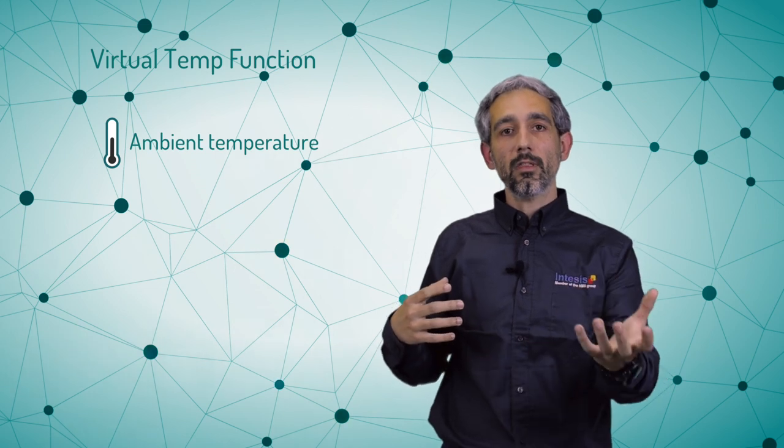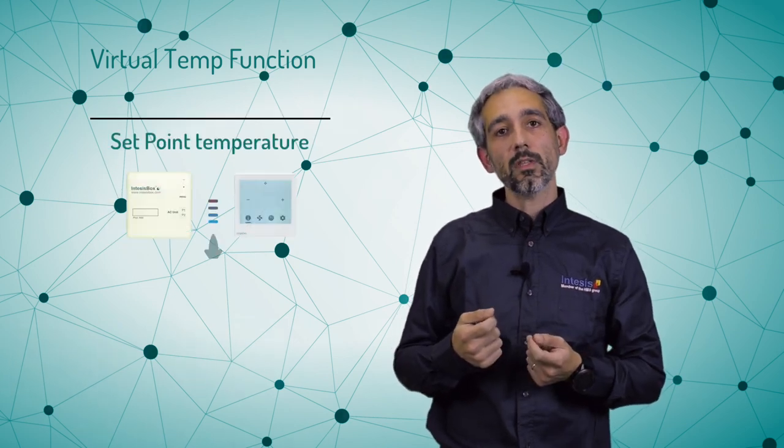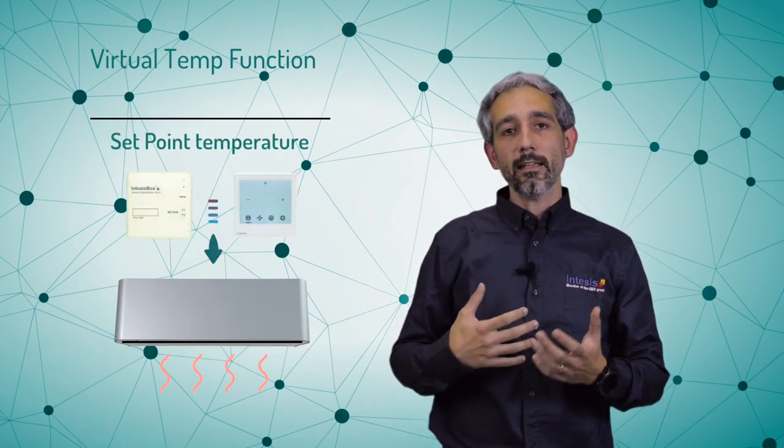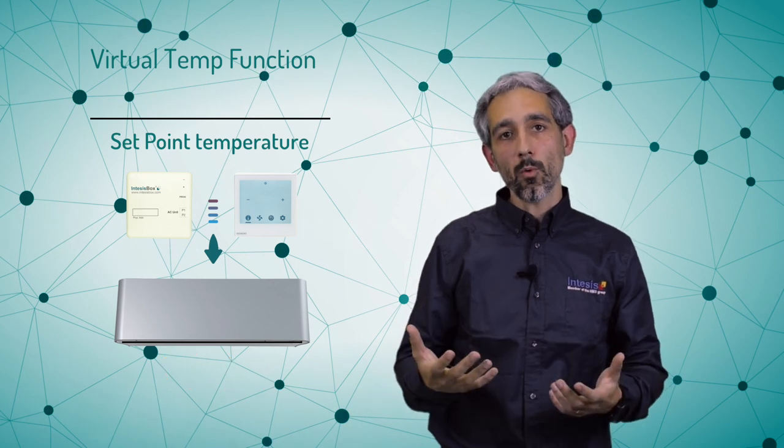In that case, what we do is collect in the same way this external source of information of the ambient temperature and compare it with the information that we have from the AC system. Then, calculating this difference, we adjust the setpoint so the AC unit is working and getting the temperatures that the user really wants in the room.